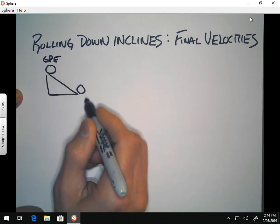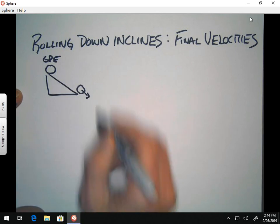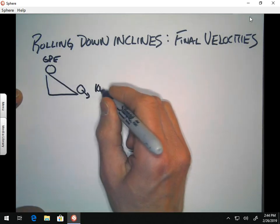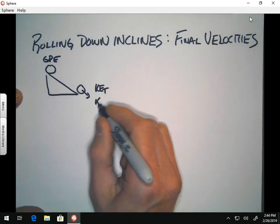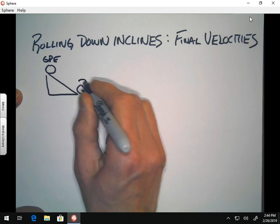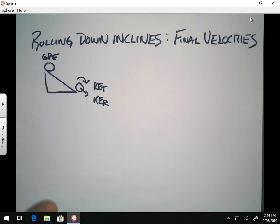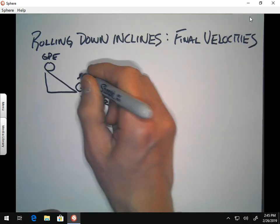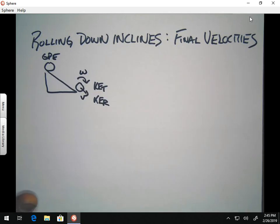When it gets down to the bottom, it's going to have both translational and rotational kinetic energies. Because its center of mass is moving with a velocity V, and it's also rolling, which means it has some omega as it goes.